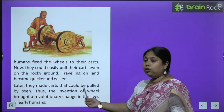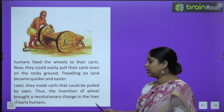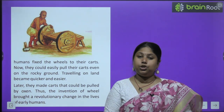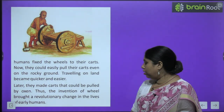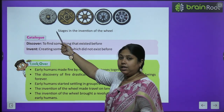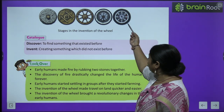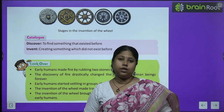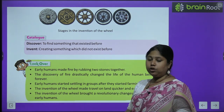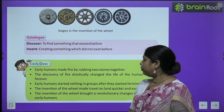Now they could easily pull their carts even on rocky ground — traveling on land became quicker and easier. Later they made carts that could be pulled by oxen. Thus the invention of the wheel brought a revolutionary change in the life of early humans — is tarikay se pehla transportation system develop hua. Slowly and gradually, the wheel went through many improvements leading to the modern wheels we see in cars and vehicles today.